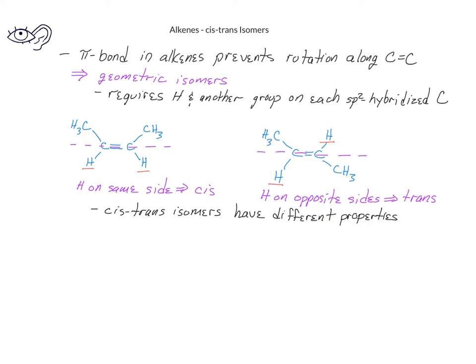If we have an alkene that has two of the same group on one of the carbons — for example, both hydrogens — then that alkene will not have cis-trans isomers. There must be two different groups on each of the sp2 hybridized carbons in order to have cis-trans isomers.